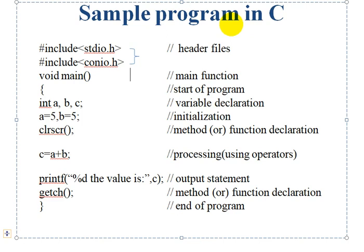First, we have two header files: include stdio.h and include conio.h. These two are the header files.